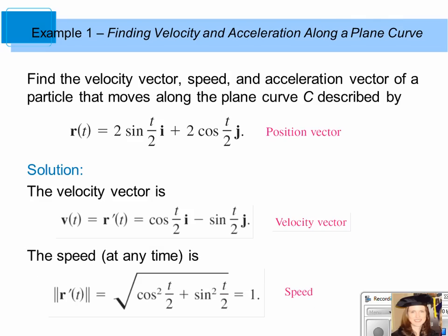The speed at any time is equal to the magnitude of the velocity vector. When you find the magnitude, you get cosine squared of t over 2 plus sine squared of t over 2, which is a trig identity. Cosine squared u plus sine squared u equals 1. So speed is constant — the magnitude of the velocity vector at any time is always 1.